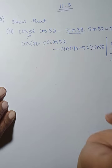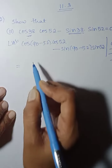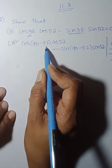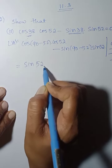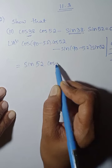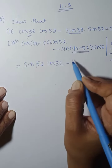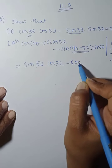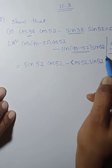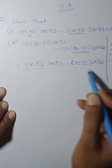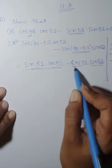Look at this identity: cos of (90 minus angle A) is sin A. So sin 52 into cos 52, minus sin 52 into sin 52 — so sin 52 into cos 52. Both terms are the same and they cancel.